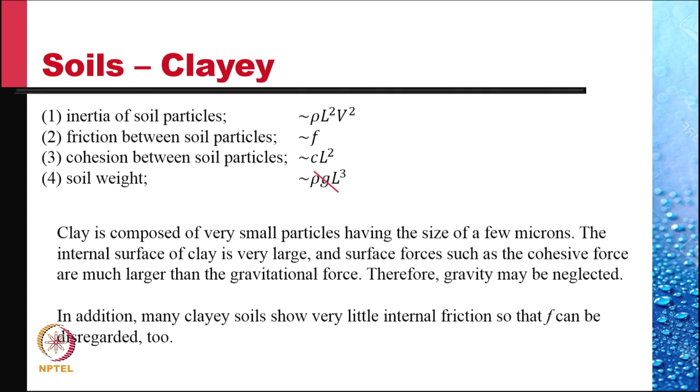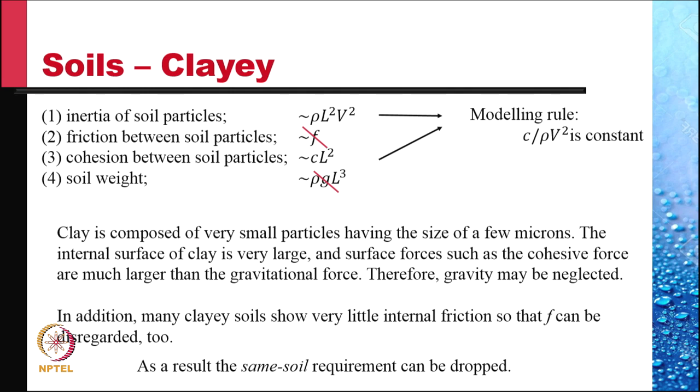And surface forces such as cohesive forces are therefore much larger than the gravitational forces. Therefore, the gravity may be neglected. In addition, many clayey soils show very little internal friction. There is largely cohesion, so that f can be disregarded too. So now only the first and the third law need to be modeled. So the same soil requirement can be dropped. We can choose different soils since we no longer need to keep f constant. The first and the third give the modeling rule that c by ρV² is constant. And from the third requirement we get the prediction rule that f divided by cL² is a constant.